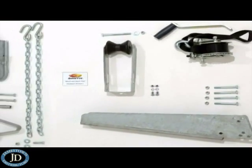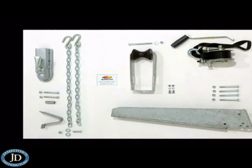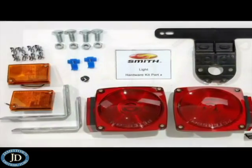As we get to the final assembly, we'll install the winch post with the winch, the bow stop, the coupler, safety chains, and then we'll move into the lights.